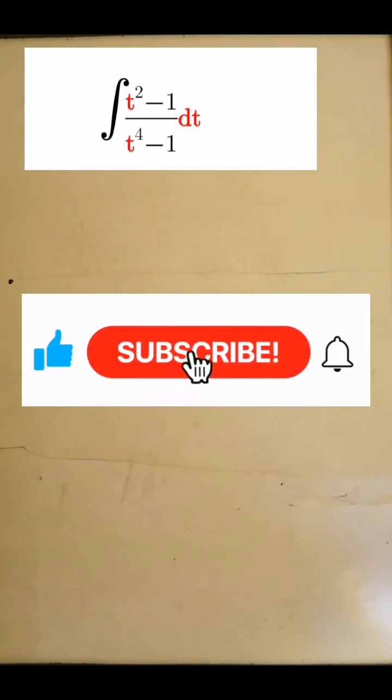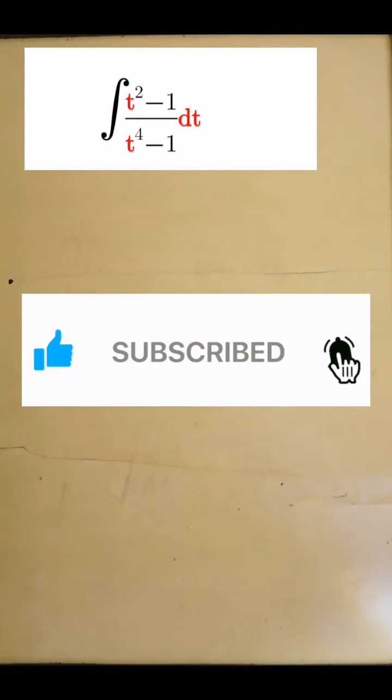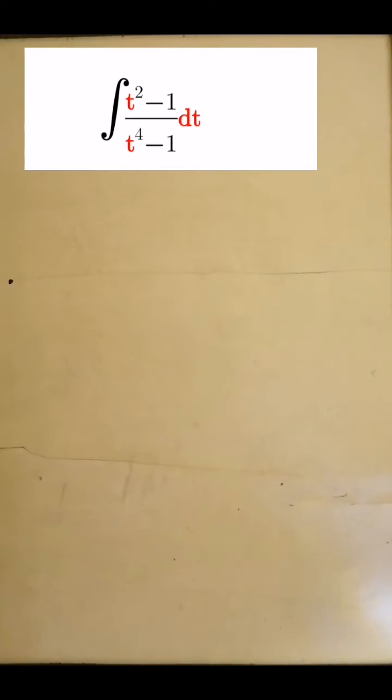Integrate t squared minus 1 all divided by t to the exponent 4 minus 1 dt. Please kindly like my videos, follow me, share, and leave your comments for us to build the mathematics community.